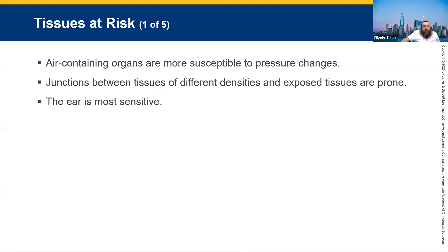Tissues at risk with a blast: organs that contain air are definitely susceptible. Ears, heart, lungs, and major blood vessels can all be a problem. Patients can have ringing in the ears, pain in the ears, even bleeding from the ears.